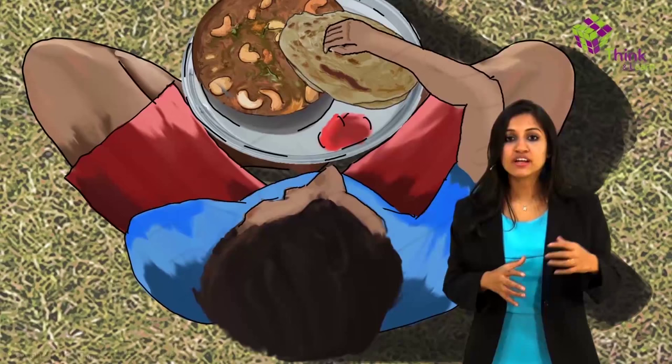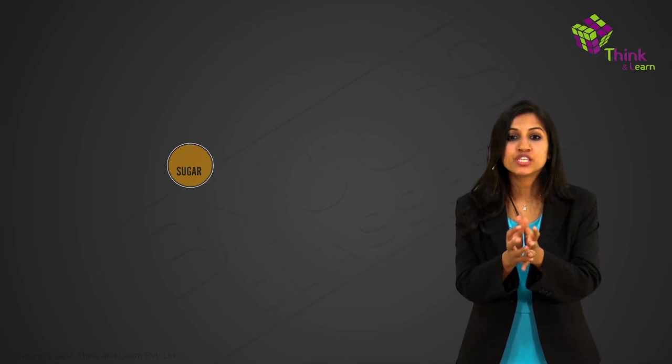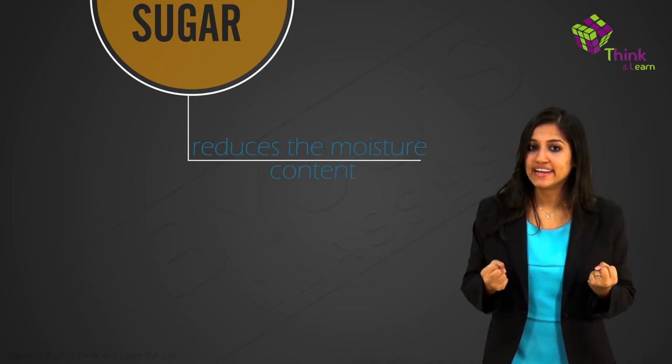You will find some chapatis with jam and vegetable curry, and you will also find a glass of orange squash. Jams, jelly, squashes are all preserved by sugar. Why sugar? Because sugar reduces the moisture content, and if moisture content is reduced, growth of bacteria and fungus is reduced. And this is called preservation by using sugar.